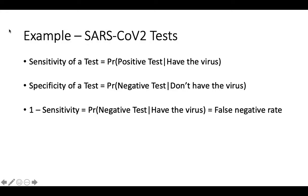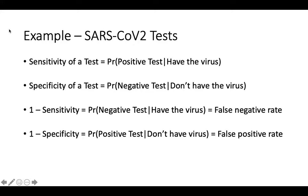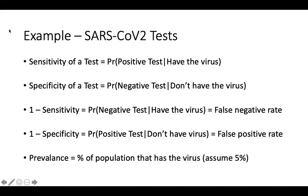One minus the sensitivity of a test tells you the probability that you will get a negative test result if you have the virus. This is also known as the false negative rate of a test. One minus the specificity tells you the probability of getting a positive test result if you don't have the virus, also known as the false positive rate. The last term to know is the prevalence of the virus, which measures the percent of the population that actually has the virus.